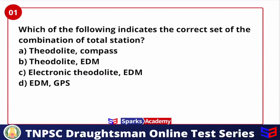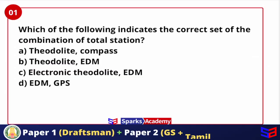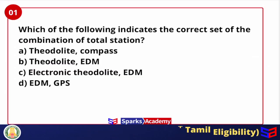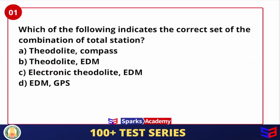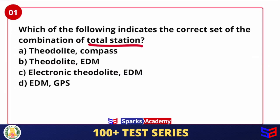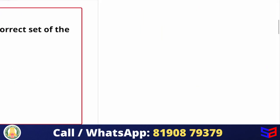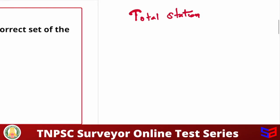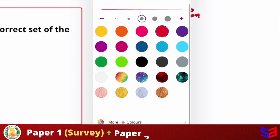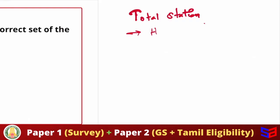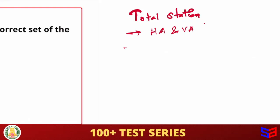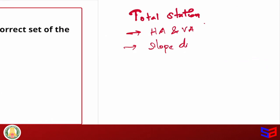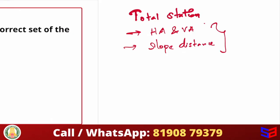Which of the following indicates the correct set of the combination of a total station? When the total station is used, it is a very advanced instrument for measuring both angles and distances. With the help of total station, we can measure horizontal angle, vertical angle, and slope distance directly.